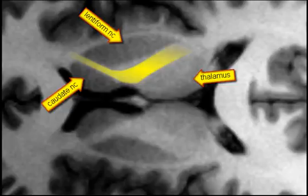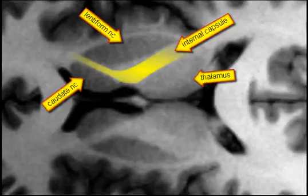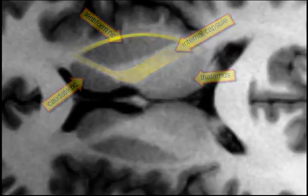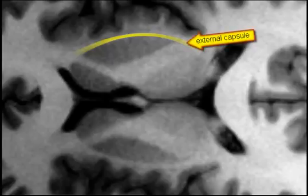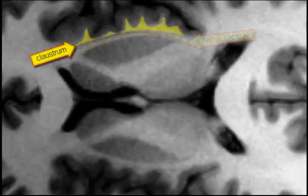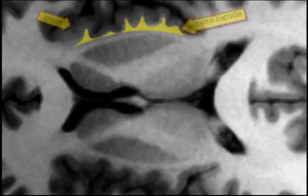Between the caudate, lentiform nucleus and thalamus lies the internal capsule. Laterally the lentiform nucleus is covered by the external capsule. Then there is a thin sliver of gray matter, the claustrum, which is separated from the insula by white matter called the extreme capsule.